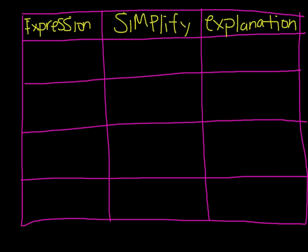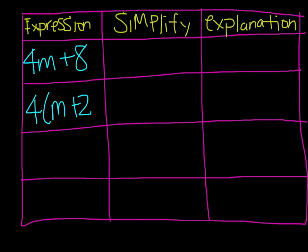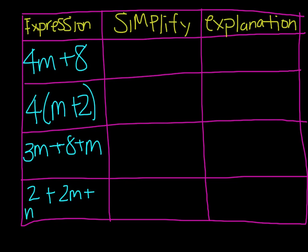Let's take a look at another example. Further down on your paper, you'll notice there are four expressions: 4m plus 8, 4 times the quantity m plus 2, 3m plus 8 plus m, and 2 plus 2m plus m plus 6 plus m. We're going to analyze each to see if they are truly equivalent — we need to simplify each expression so that every expression looks exactly the same.